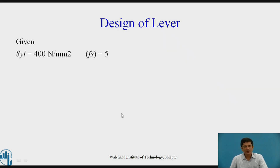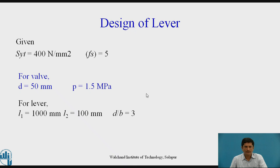Now let us see what are the given things. SYT value is 400 N per mm square and factor of safety is given as 5. For valve, the diameter is 50 mm and the blow off pressure is 1.5 MPa. For the lever, L1 is 1000, L2 length is 100 mm and the cross section D by B equals 3. And for the pin, bearing pressure P is 25 N per mm square.